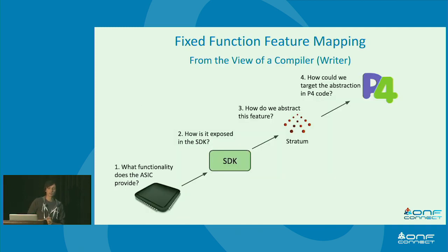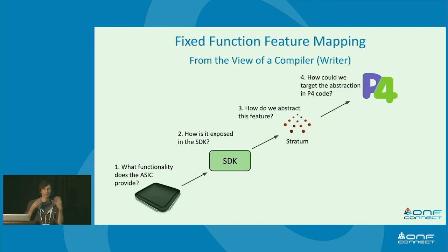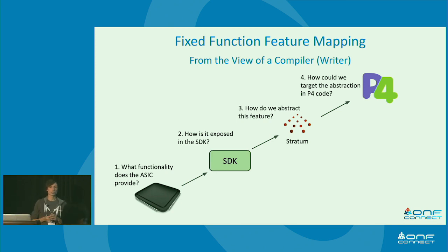How do we do this fixed feature mapping? This is the view from the compiler, from the bottom up. First we look at the ASIC — what functionality is actually there, because what's not there we can't do magic. Then how is this functionality exposed in the SDK? Some SDKs have opinions about how to expose things, and that changes your view about a certain feature. Then how do we abstract this feature in Stratum? We don't want to go directly into the SDK because then we're dependent on the actual API. And the last step is how do we target this abstraction in P4 code — for example, we have tables, actions, action profiles.